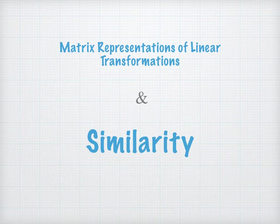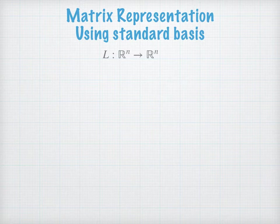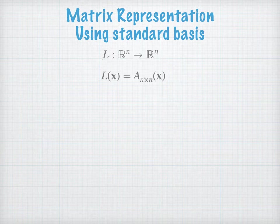This video introduces how matrix representations of linear transformations with respect to different bases define a concept in linear algebra. First, if you want to find a matrix representation for a linear transformation using standard bases, we can let a linear transformation from Rn to Rm be L, and then the matrix A is a matrix representation for L if Lx equals A times x, where x is a vector in Rn.